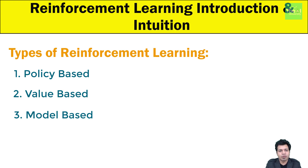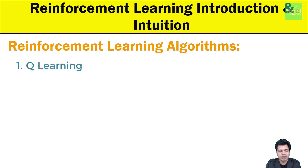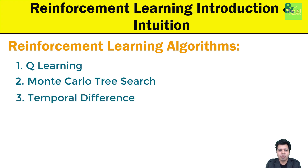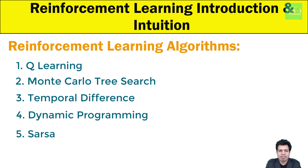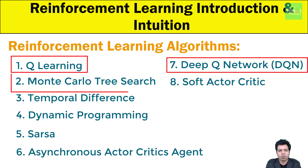Let's move on to reinforcement learning algorithms. Here is a list of some of the reinforcement learning algorithms: number one is Q-learning; number two is Monte Carlo tree search; number three is temporal difference; number four is dynamic programming; number five is SARSA; number six is asynchronous actor-critic agent; number seven is deep Q-network or DQN; number eight is soft actor-critic. Out of all these algorithms, Q-learning, deep Q-network, and Monte Carlo are the most popular ones.